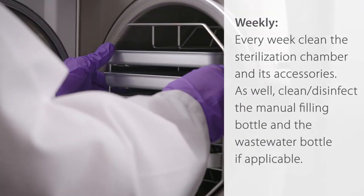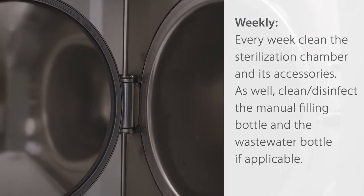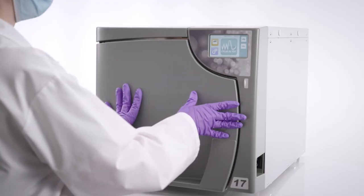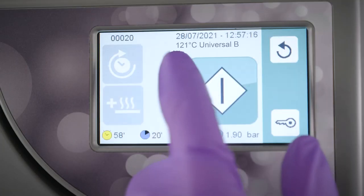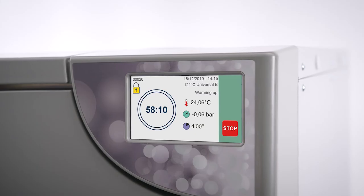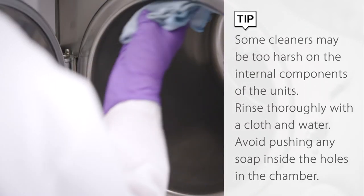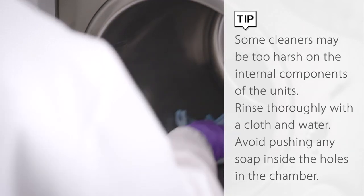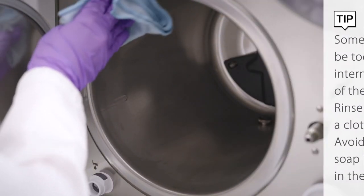Weekly. Every week, clean the sterilization chamber and its accessories. As well, clean and disinfect the manual filling bottle and the wastewater bottle, if applicable. Run one empty cycle after using any cleaner or soap. Helpful Tip: Some cleaners may be too harsh on the internal components of the units. Rinse thoroughly with a cloth and water. Avoid pushing any soap inside the holes in the chamber.